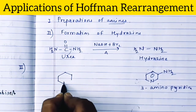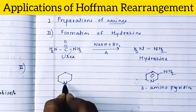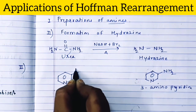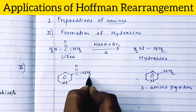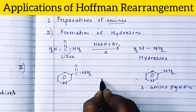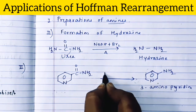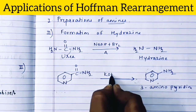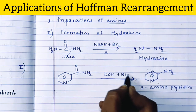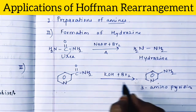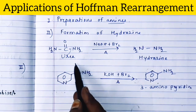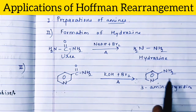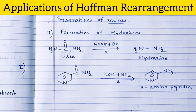But Hofmann rearrangement is used to produce 3-aminopyridine. Here we use nicotinamide, which has a CONH2 group at the third position. When it is treated with KOH or NaOH in the presence of bromine on heating, the C=O is eliminated and we get 3-aminopyridine.